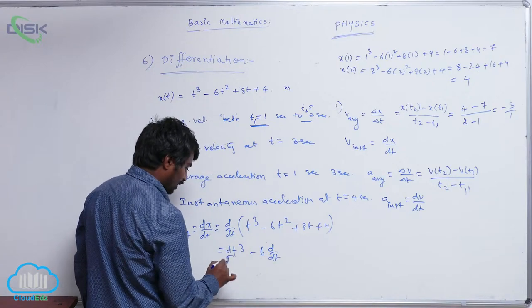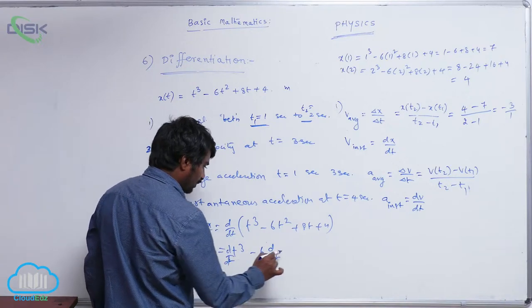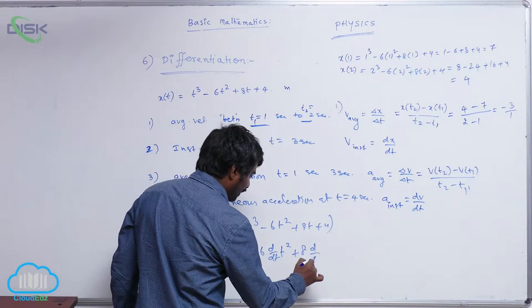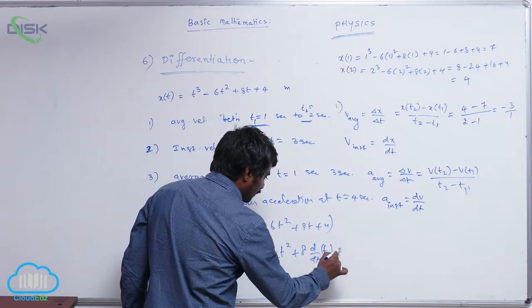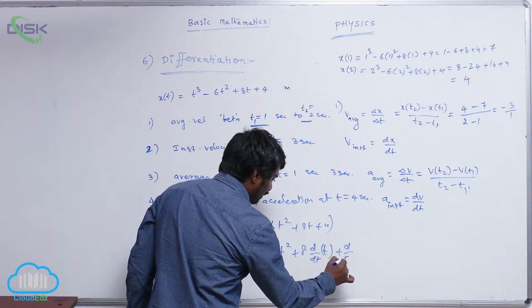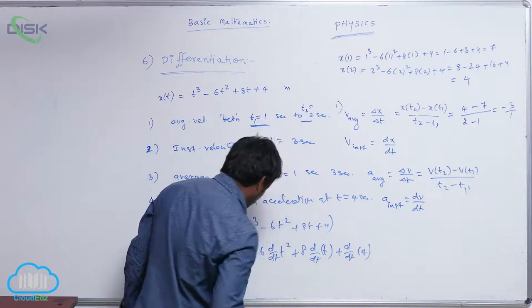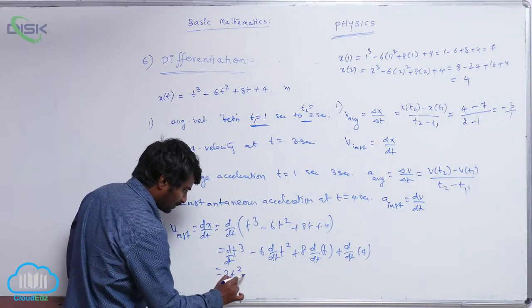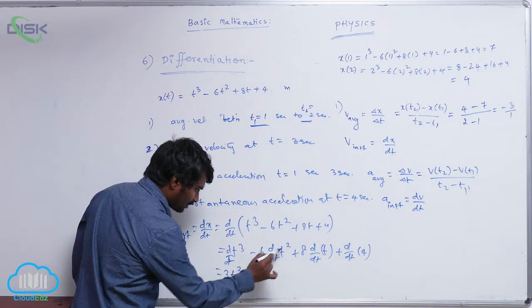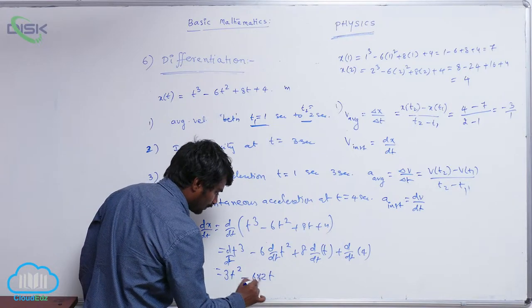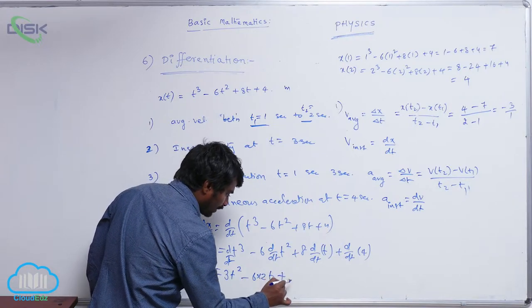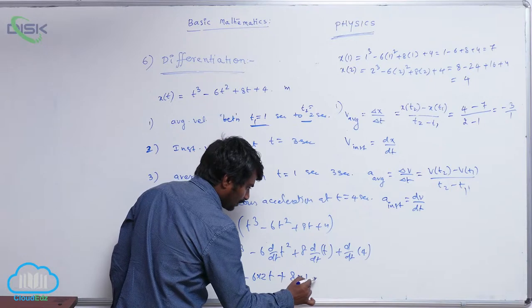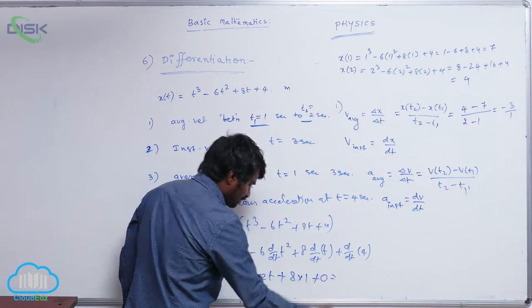d by dt of t squared plus 8 into d by dt of t plus d by dt of 4. Here, t cube differentiation is 3t squared minus 6, t squared differentiation is 2t plus 8, dt by dt is 1, and differentiation of a constant is 0.